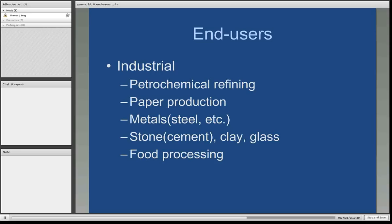Another category of end users is industrial. Petrochemical refiners, in addition to using natural gas liquids, actually run their plants on natural gas. It's also used in paper production, steel foundries and other metal foundries for their furnaces. The stone and cement industry uses natural gas to dry cement, which is a wet slurry type when processed. And of course, food processing is one of the more obvious uses, where natural gas fires massive commercial-sized ovens.